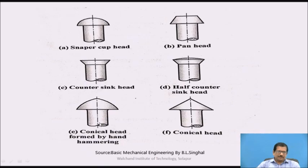The fifth one is conical head formed by hand hammering. This part is conical shaped, which is formed by hand hammering. The next one is conical head — this is a sharp corner head which is called conical head. The purpose of each type of head is different. The snapper cup head is used where there is an extended portion on the plate which should not injure anybody. In case of pan head, it will be the extended part on the plate and has more grip than the snapper cup head.